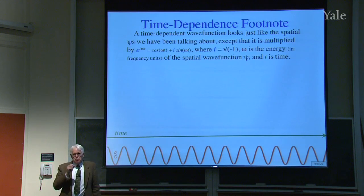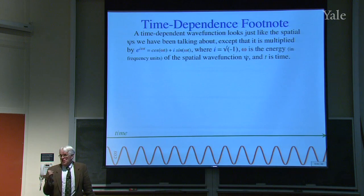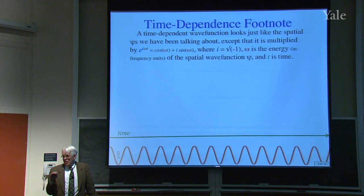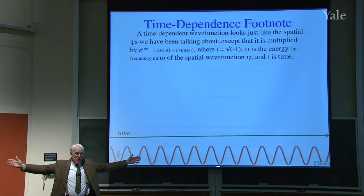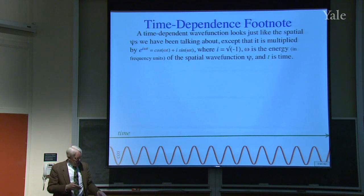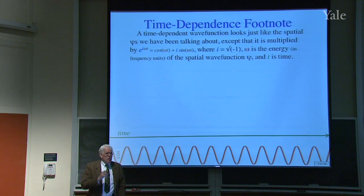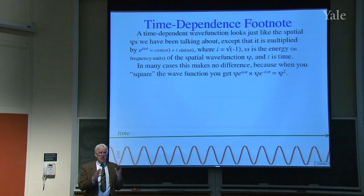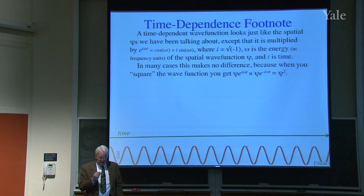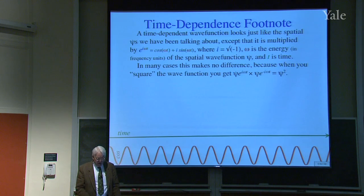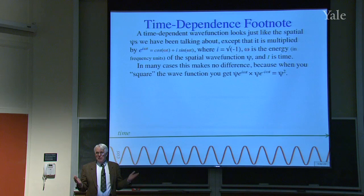An interesting question: the rate of oscillation depends on where you define zero energy to be, which seems problematic. But when you square the wave function to get the probability density, you multiply ψ·e^(iωt) times its complex conjugate ψ·e^(-iωt), and all the time-dependent terms cancel out. So for a single state you don't really care what the absolute rate of oscillation is.